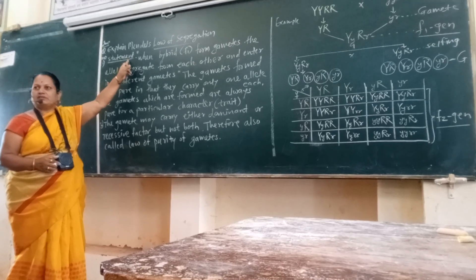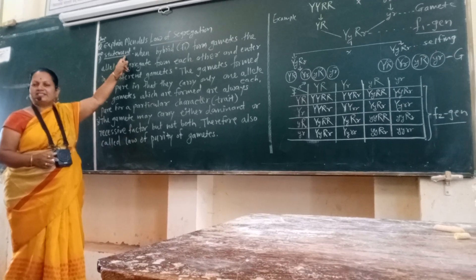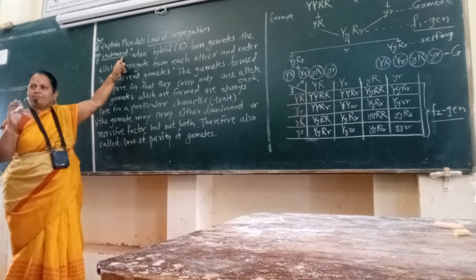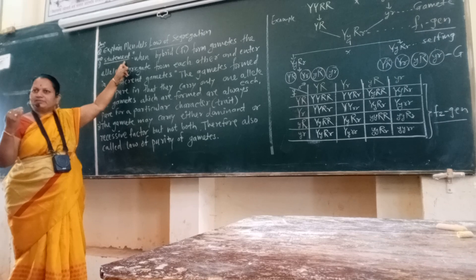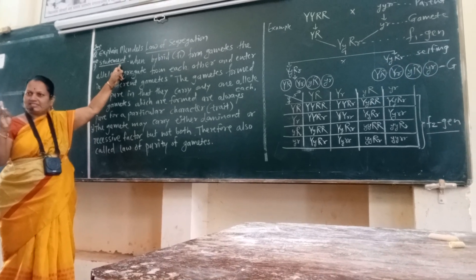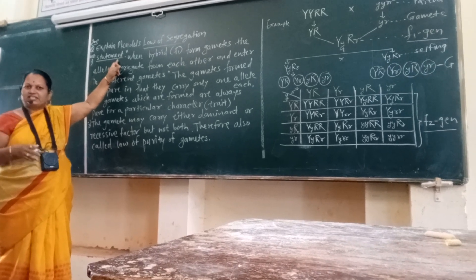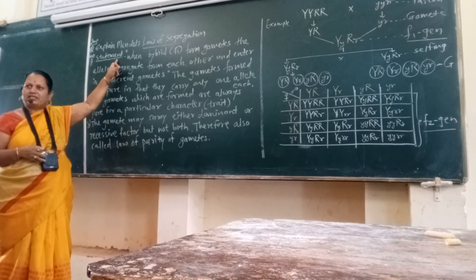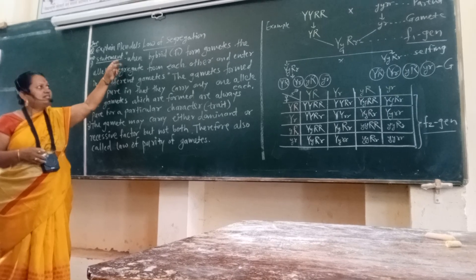What is the law of segregation? Mendel stated three laws: the first law of dominance, the second law of segregation, and the third law of independent assortment.